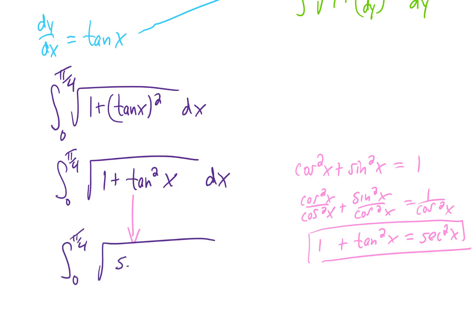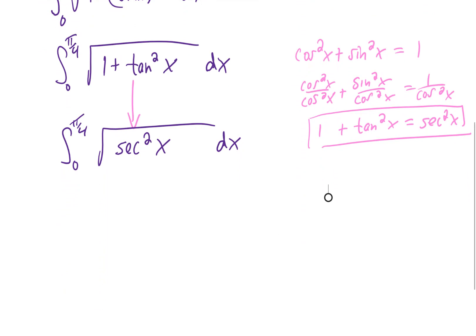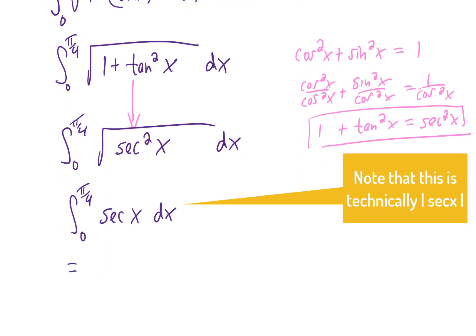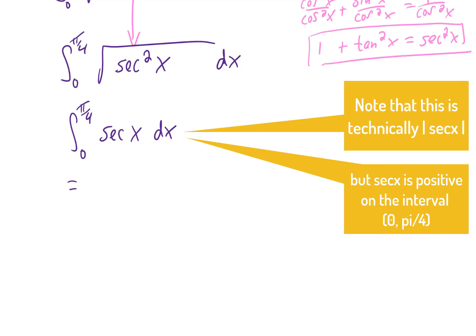So under the radical, we now have secant squared x. Taking a square root of that just leaves us with the integral of secant x. Now just when things are starting to look simple, you remember that the integral of secant x is actually not that simple.